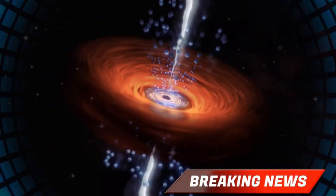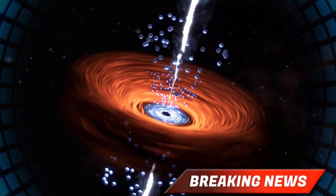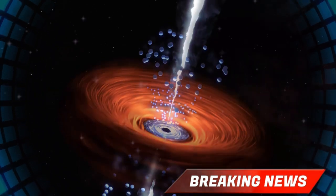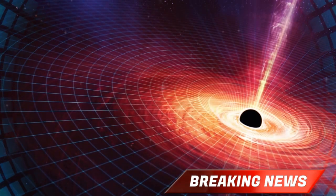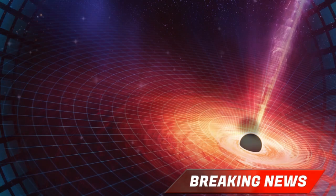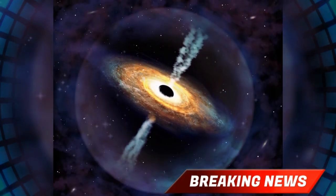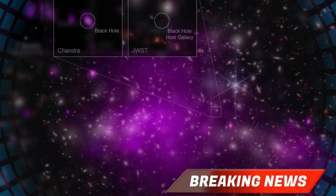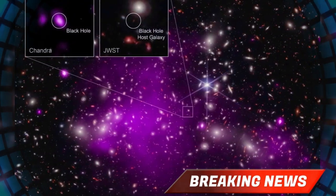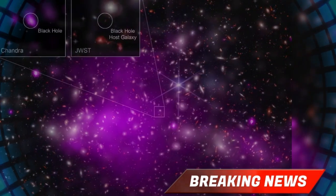When black holes consume matter at such extreme rates, they don't just sit silently in space. The material falling in forms an accretion disk, a swirling ring of gas and dust spinning at nearly the speed of light. This disk heats up, emitting incredible amounts of energy, often brighter than the entire galaxy surrounding it.